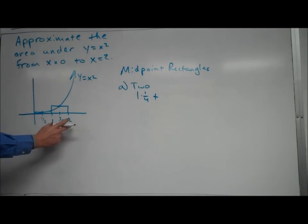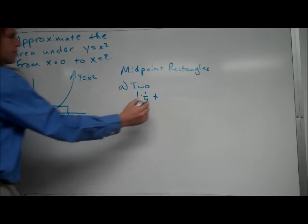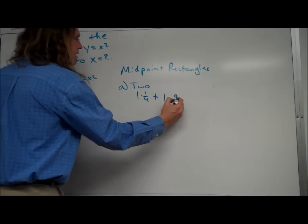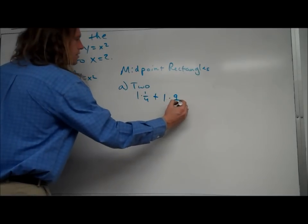The next one has a width of one. The height is determined by three-halves. We take three-halves, plug it in for x, so the height is—sorry, I'm screwing up here—when we plug three-halves in, it's going to be nine-fourths. So the height is nine-fourths.